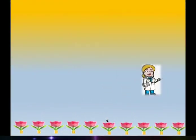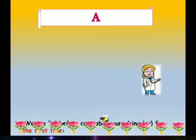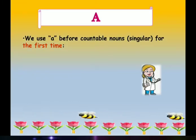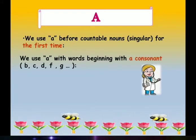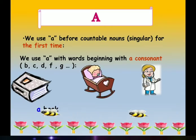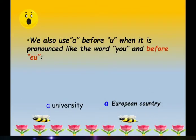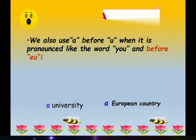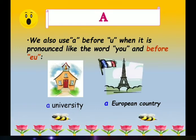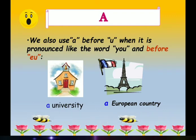Dear students, in the last video we learned about the article A. We use article A before the countable singular noun and before words beginning with consonant sounds or consonant letters. We saw examples like a book, a baby, a doctor. As well as we use article A before U and the U sound. You can see examples: university, European, unicorn and uniform. When we are pronouncing these words, the consonant sound — that is the 'yuh' sound — is coming.